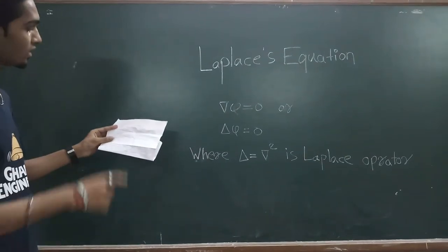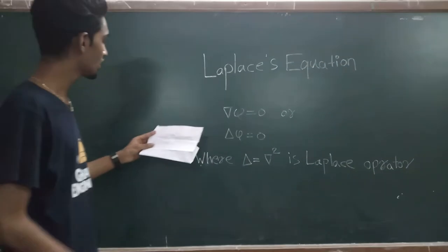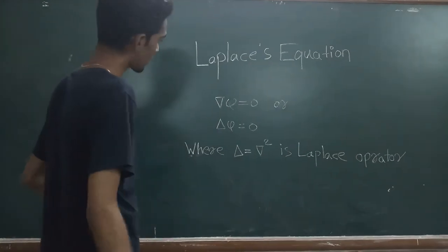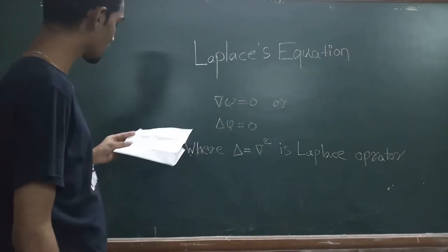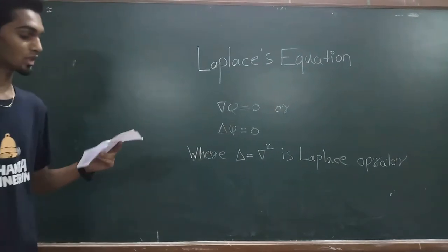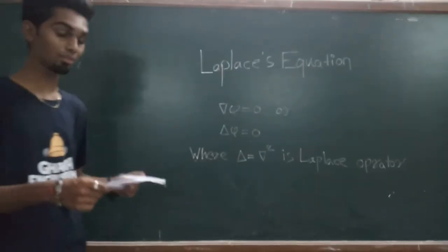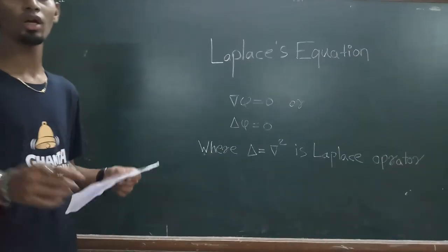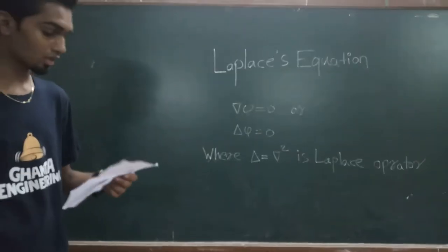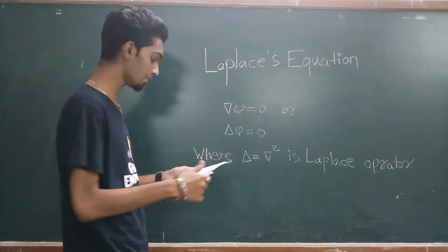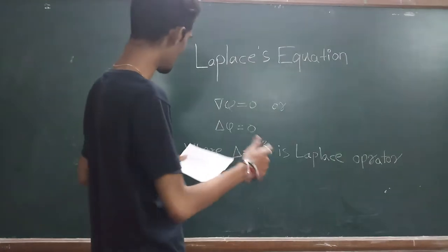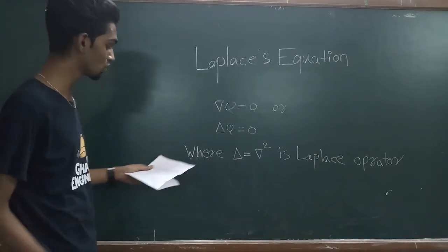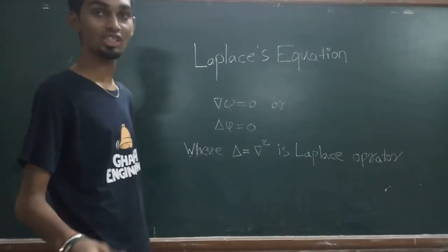In mathematics, the Laplace equation is a second-order partial differential equation. The Laplace equation and Poisson's equation are the simplest examples of elliptical partial differential equation theory. The general theory of solutions of the Laplace equation is known as potential theory.